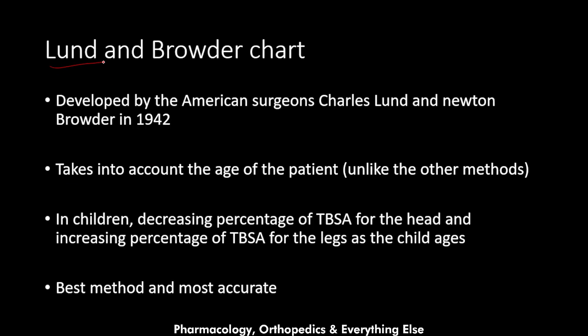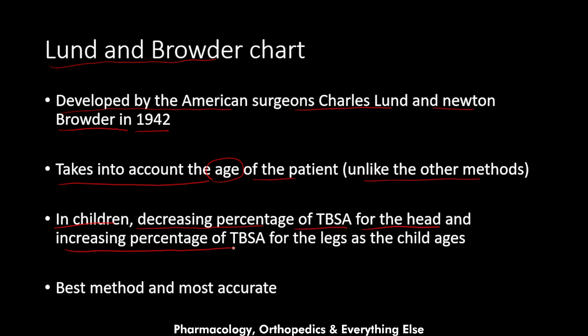The Lund and Browder chart was developed by American surgeons Carlisle Lund and Newton Browder in 1942. Unlike the other methods, it takes into account the age of the patient, which is why it is very good for children. In children, the percentage for the head decreases and the percentage for the legs increases as the child ages. It is the most accurate method used in burn units, but it takes more time to calculate, which is why it is not used for initial assessment.